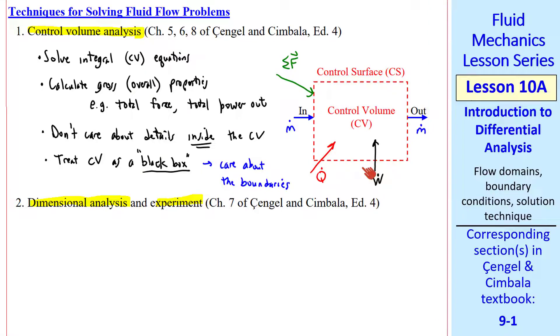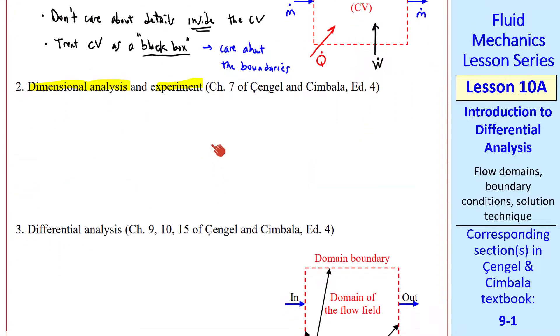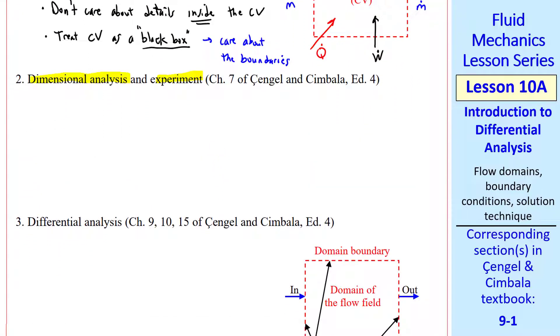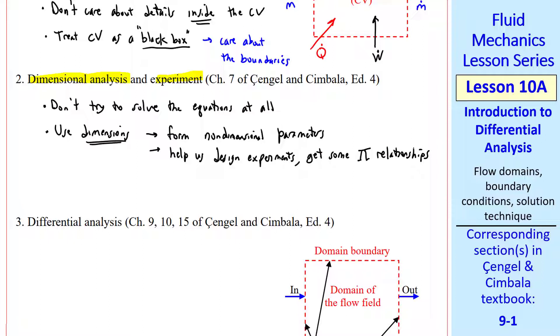In dimensional analysis combined with experiment, we don't try to solve the equations at all. We simply use dimensions, and we form non-dimensional parameters. This helps us design good experiments, and to get some relationships between the non-dimensional parameters called pies. Then we do some experiments, perhaps in a wind tunnel or water tunnel, to measure the flow properties of interest.